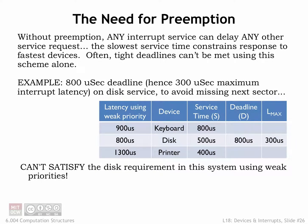In a weak priority system, the currently running task will always run to completion before considering what to run next. This means the worst-case latency for a device always includes the worst-case service time across all the other devices — in other words, the maximum time we have to wait for the currently running task to complete. If there's a long-running task, that usually means it will be impossible to meet tight deadlines for other tasks.